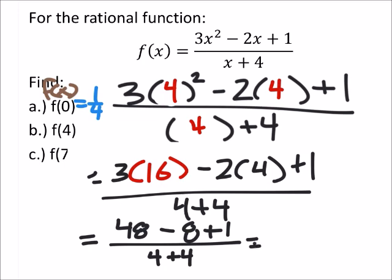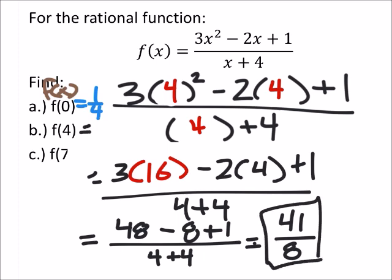And then in the denominator we have 4 plus 4. So, addition and subtraction from left to right, 48 minus 8 plus 1. I got 41. And 4 plus 4 is 8. So, f of 4 is 41 eighths.